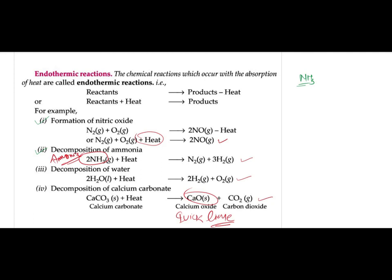If you've travelled by local trains, on every station platform there is a spot with a very pungent smell of ammonia — that location is the public toilet or public urinal. The smell from public toilets is the smell of ammonia. Ammonia is a major constituent of human urine; uric acid decomposes to give out ammonia. So the decomposition of ammonia is also an endothermic reaction — ammonia decomposes to give nitrogen and hydrogen.